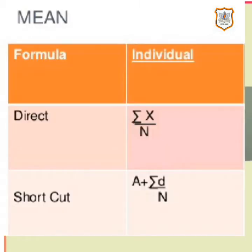Let's have a look at some important formulas to find the mean of ungrouped data. There are two methods: direct method and shortcut method. The direct method has a simple formula — mean X-bar equals Sigma X upon n, where X is observation, Sigma X is sum of observations, and n is the total number of observations.